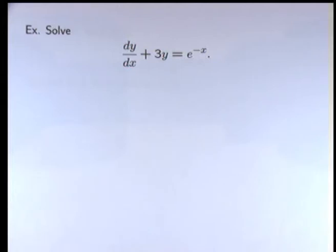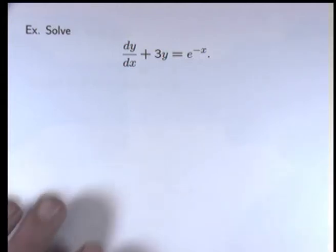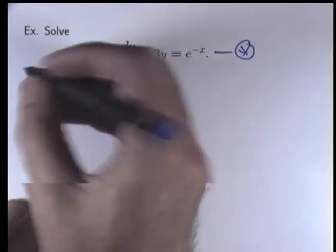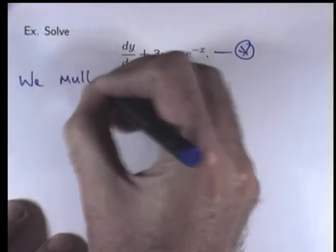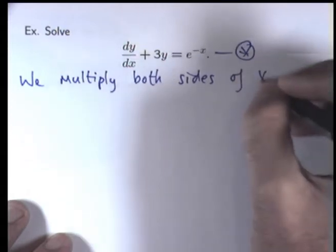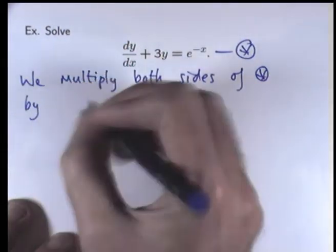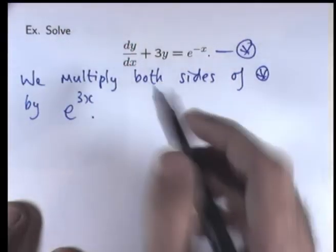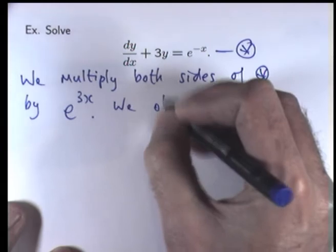I'm going to label this equation and multiply both sides of our ODE by e to the 3x. Now you may think: why e to the 3x? Why not something else, and why are we multiplying by that thing anyway? Just bear with me and we'll see where it comes from and why it's useful. So if I multiply both sides by e to the 3x, we're going to obtain the following.